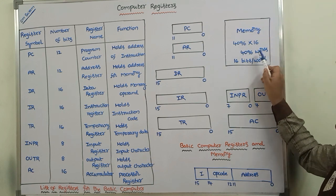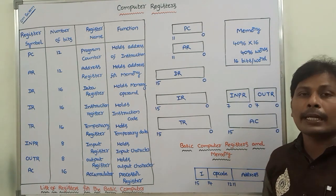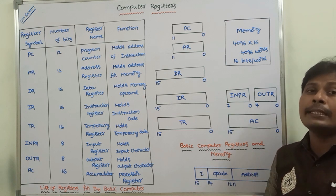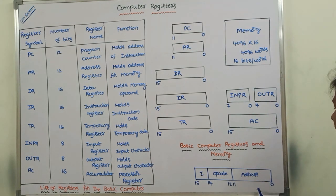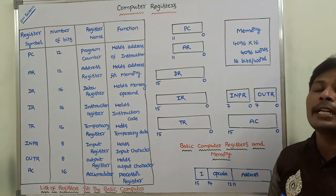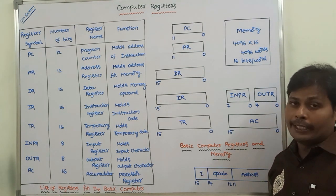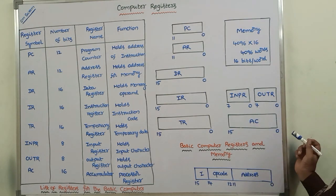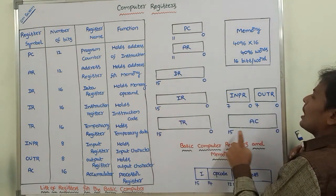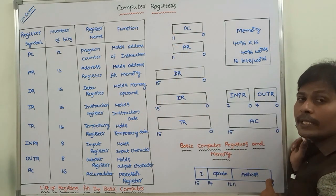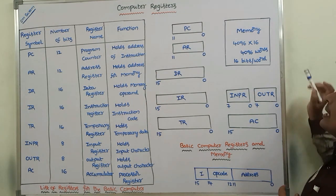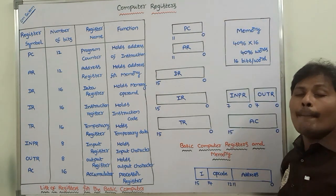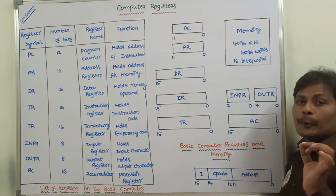Each and every word in the memory has a particular address. To specify that address, we have to use a 12-bit address. By using this 12-bit address, we are specifying each and every address of the memory word. These are the 8 general purpose registers we are using for data processing. The first register is called the program counter — PC stands for program counter.